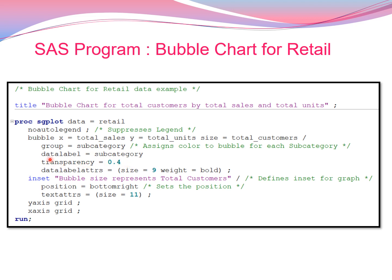If you do not want data labels, you can skip that piece of code. Transparency can be adjusted by a value of one or two and you can see the changes. The datalabel attributes include size equal to 9 and weight equal to bold.